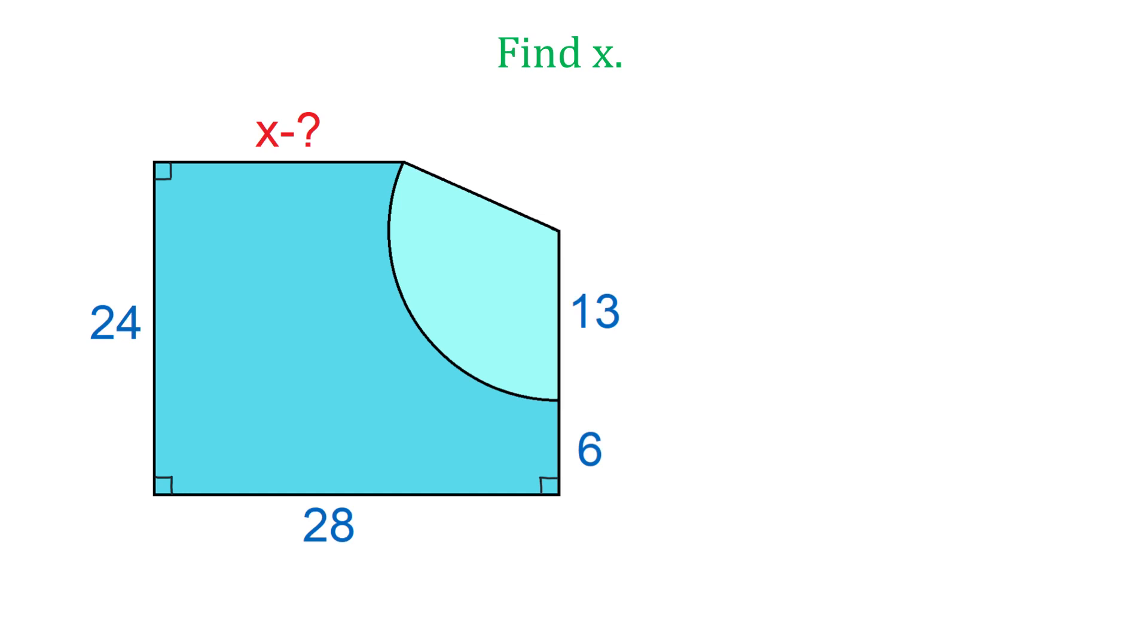To solve this problem, we will extend these two sides and form a rectangle. So here we have the rectangle and if each of these angles is 90 degrees, then this one is also 90 degrees. And now here we have a right triangle with the hypotenuse of 13 units.